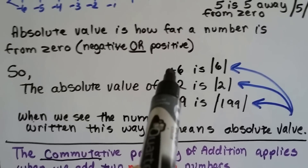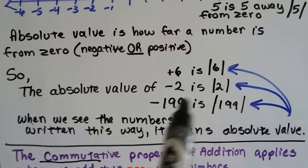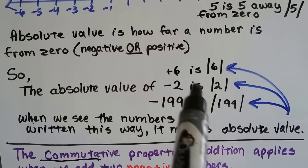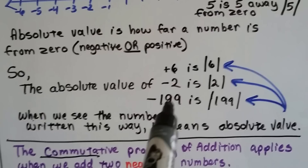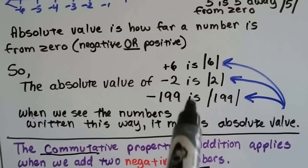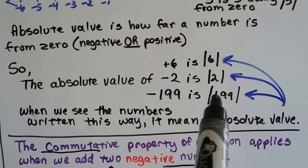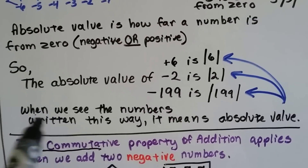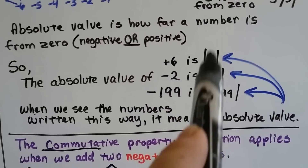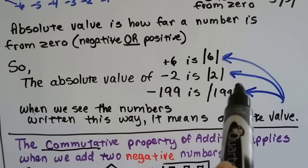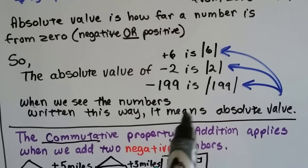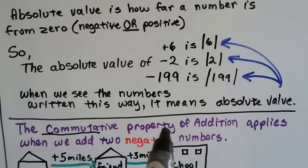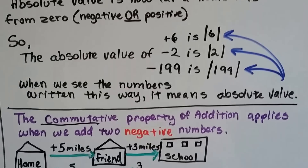The absolute value of positive six is six. The absolute value of negative two is just two. The absolute value of negative 199 is 199. When you see a number written inside two vertical bars like this, it means absolute value.